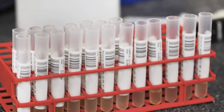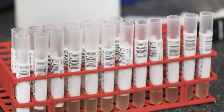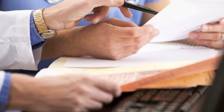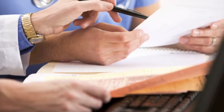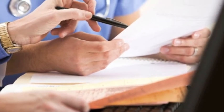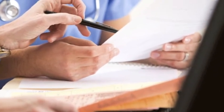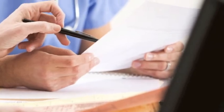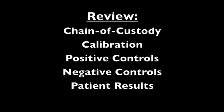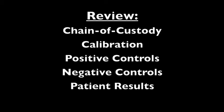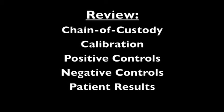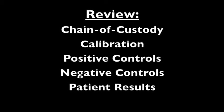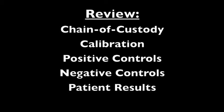The initial testing instruments read these barcodes, perform the tests, and automatically download the results to the LIMS. The instrument operator generates batch review reports to assist with the data review process, which includes review of the chain of custody, calibration, positive controls, negative controls, and patient results.